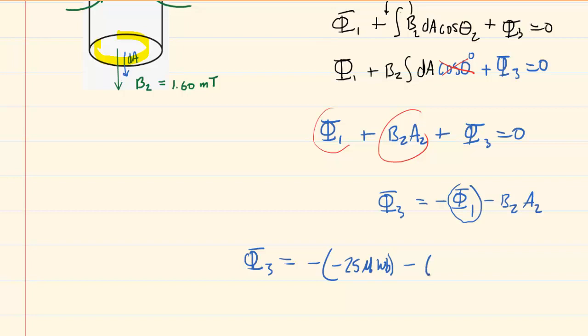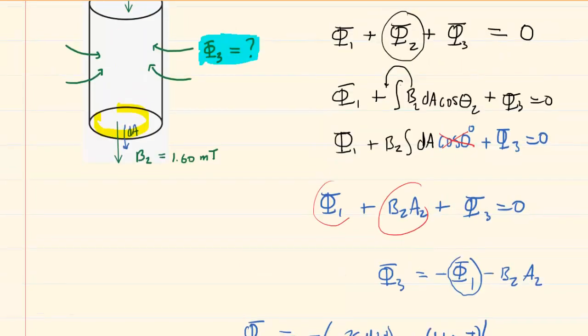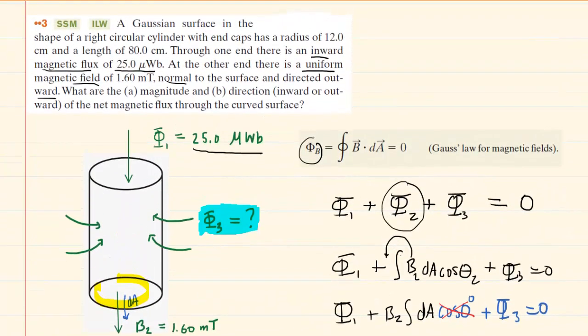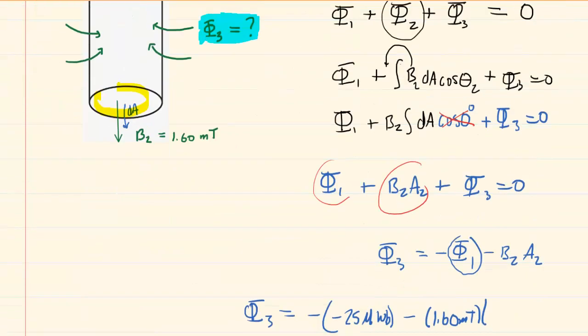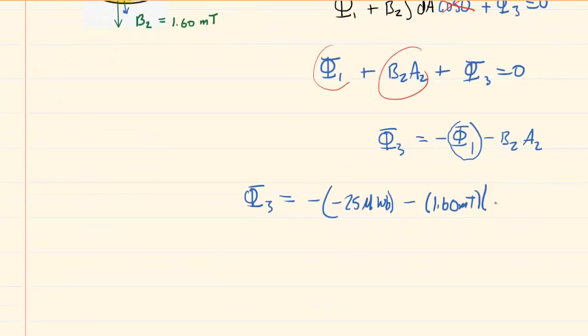So for now, we'll just plug that in as 1.6 millitesla. And then, multiplied by the circular area at that lower surface, that's just pi r squared. And the radius of this Gaussian surface was 12 centimeters. So it's going to be pi times that radius. Let's just convert that to meters right away. So instead of 12 centimeters, we'll say 0.12 meters. And then, don't forget to square it.